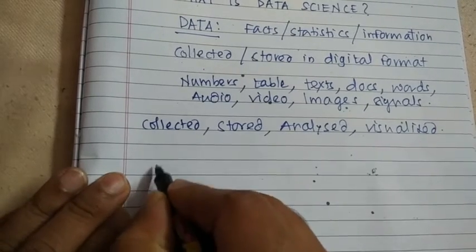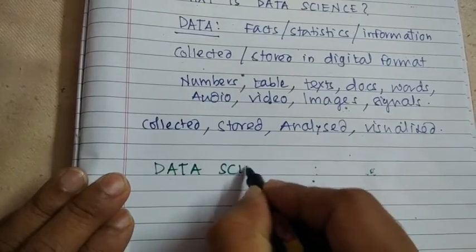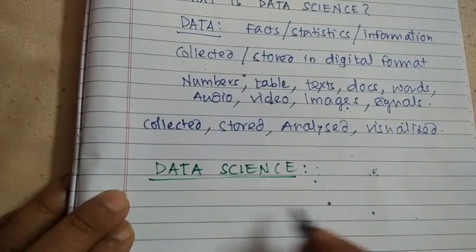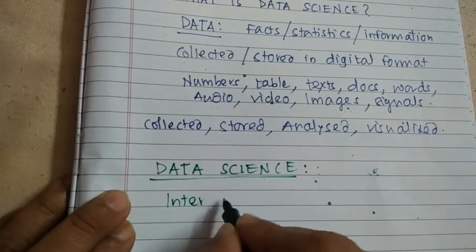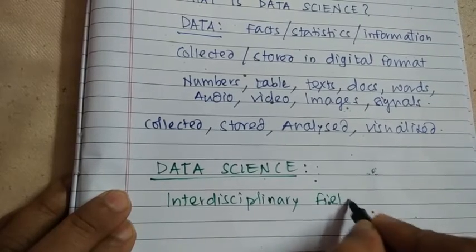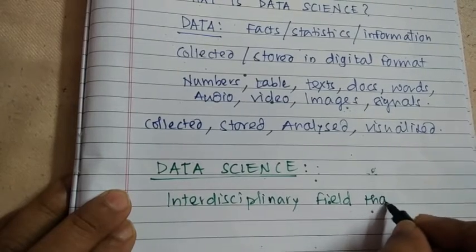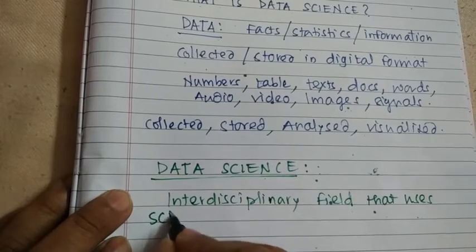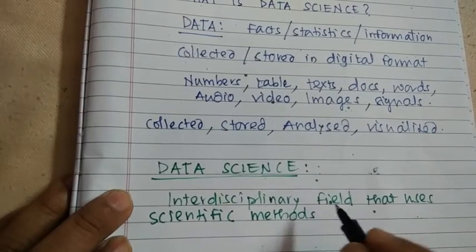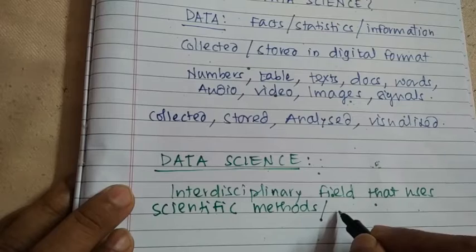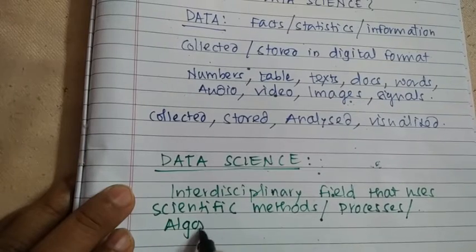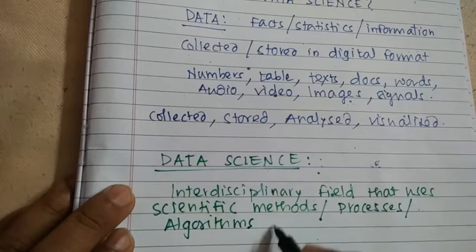Combinedly, we will see a definition of data science. So data science is an interdisciplinary field that uses scientific methods, processes, algorithms, and systems.